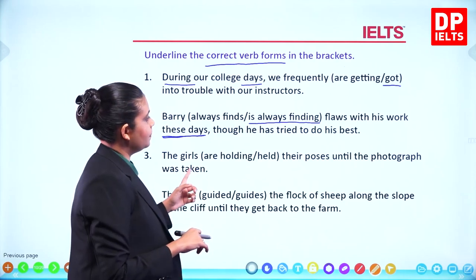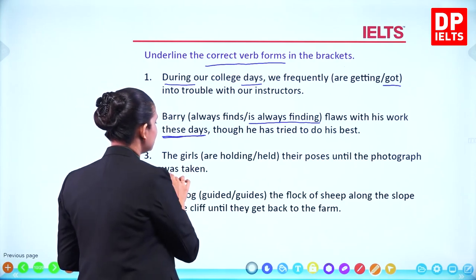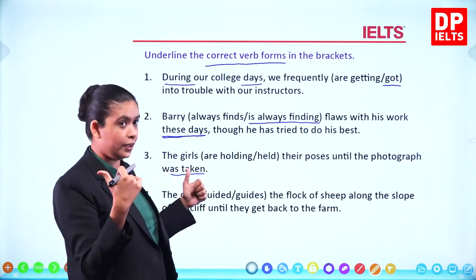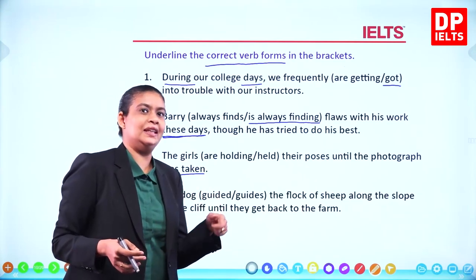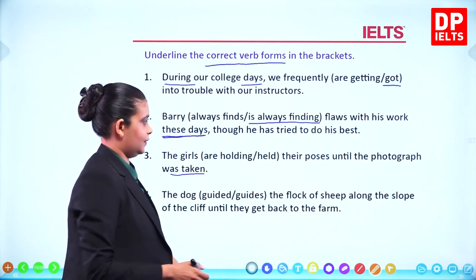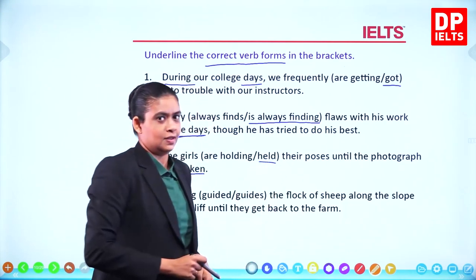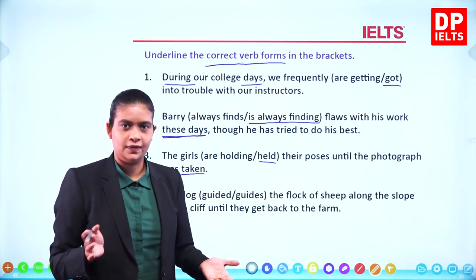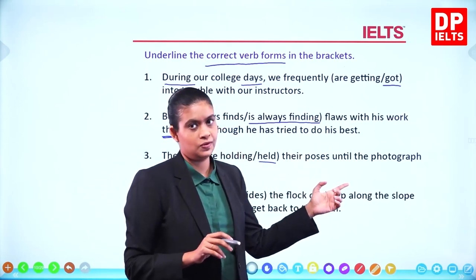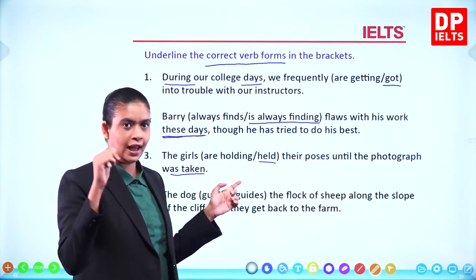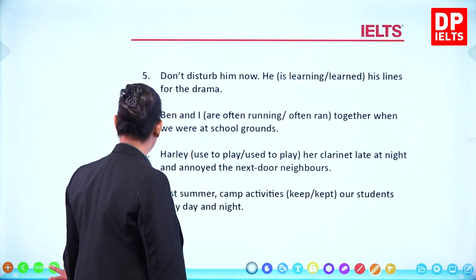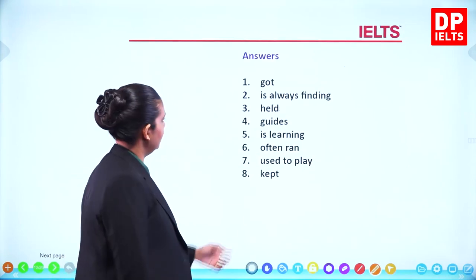'The girls held their poses until the photograph was taken.' Since 'was taken' is past, what were they doing in the past? Repeatedly holding their poses. So the answer is 'held.' The photograph was taken in the past, so everything happened in the past.